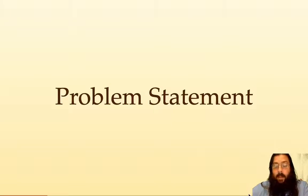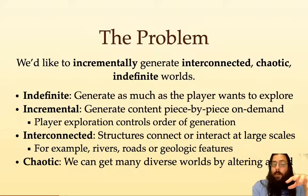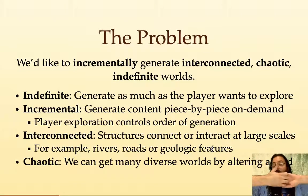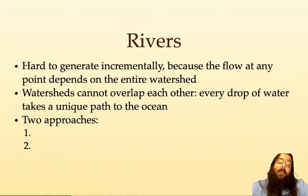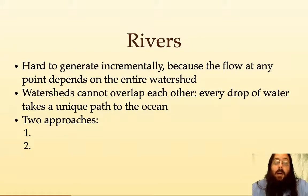Now let me talk about the problem that led me to think about this. In many cases we'd like to generate interconnected, chaotic, indefinite worlds and do that incrementally. A classic example would be Minecraft, where as you explore, the world is generated — only the parts you explore are generated, so we don't have to spend time and space generating things you're never going to see. One of the things we'd like is interconnected structures at large scales. Rivers are a great example: the amount of water flowing into the Gulf of Mexico from the Mississippi River is determined by rainfall and water flow throughout most of the continental United States. Because flow at one point depends on flows at many other points, it's hard to do incrementally.